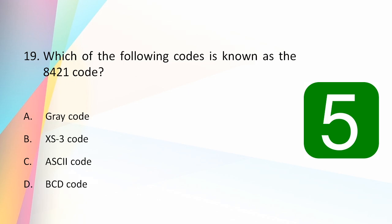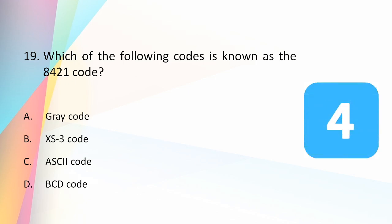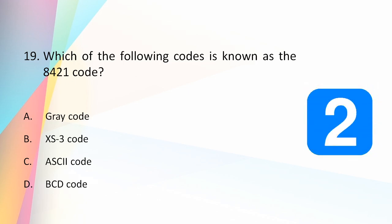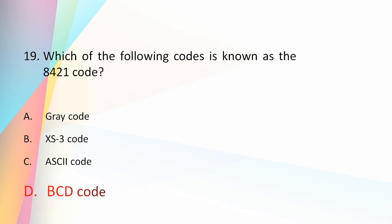Which of the following code is known as 8421 code? Gray code, XS3 code, ASCII code, or BCD code? The answer is BCD code. BCD code is a weighted code and it is not a self-complementing code. We know the position weights are 8, 4, 2, 1 — so the answer is BCD code.